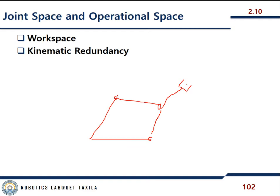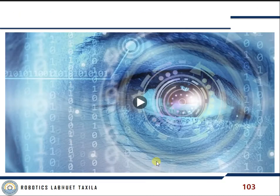The dexterous workspace is a subspace of the reachable workspace. For example, a particular point in the reachable workspace may be reachable with many different joint configurations or orientations. A manipulator with less than six degrees of freedom cannot take an arbitrary position and orientation in space.